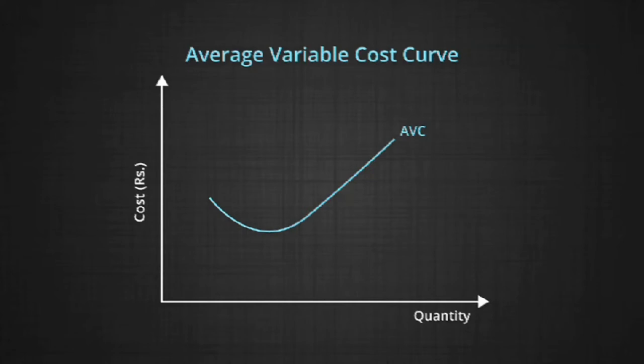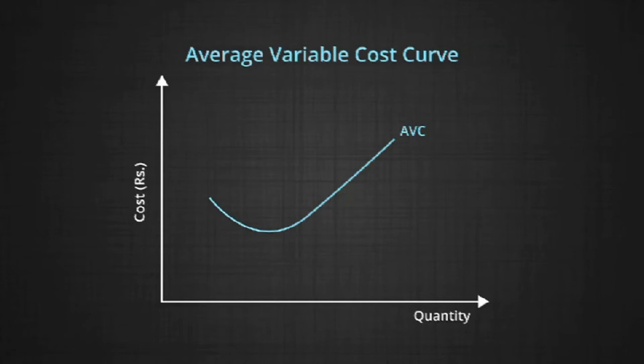Initially, the increase in variable input leads to an increase in variable cost and total cost. But beyond that point, the limitation of not being able to increase the fixed input means the gains made by additional variable input start to decline. This results in an increase in total cost and total variable cost at an increasing rate — it is this rise in TC and TVC that the upward moving part of the AVC curve represents.